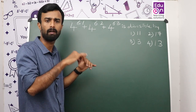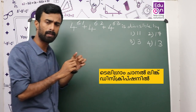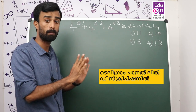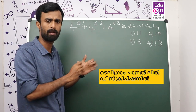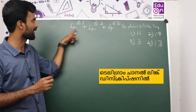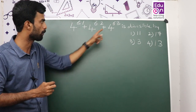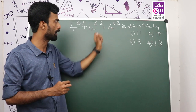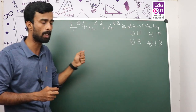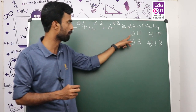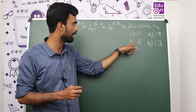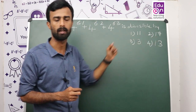Our question is: 4 raised to 61, plus 4 raised to 62, plus 4 raised to 63 — is this expression divisible by what? Option 1 is 11, Option 2 is 17, Option 3 is 3, Option 4 is 13.